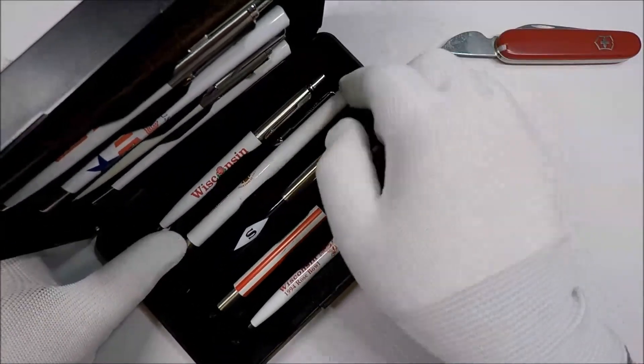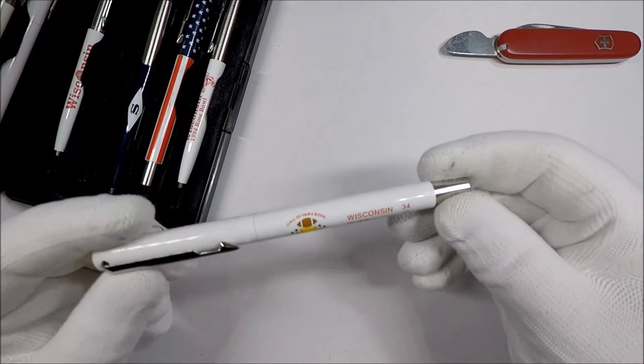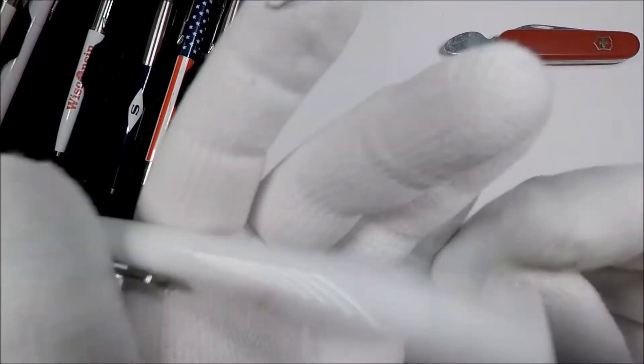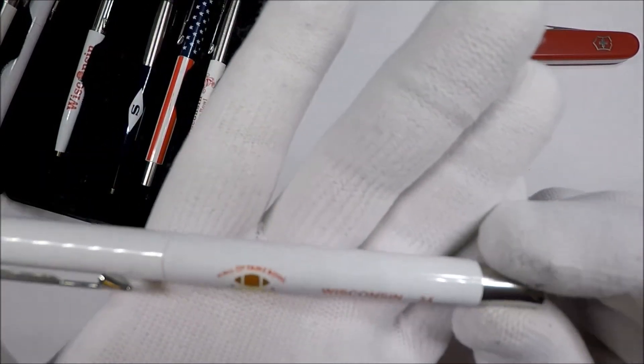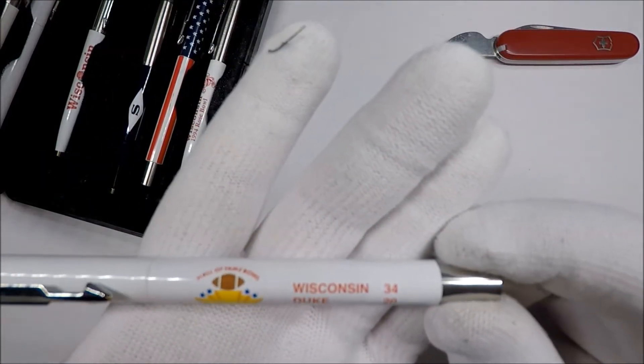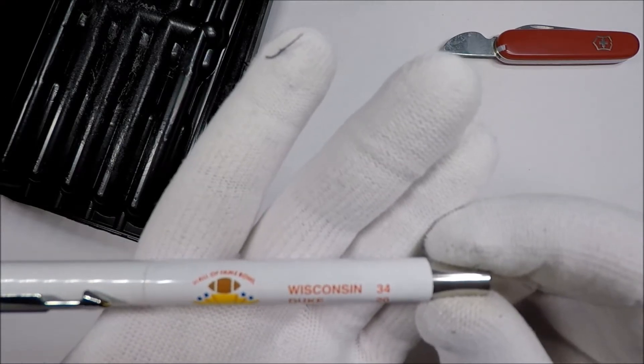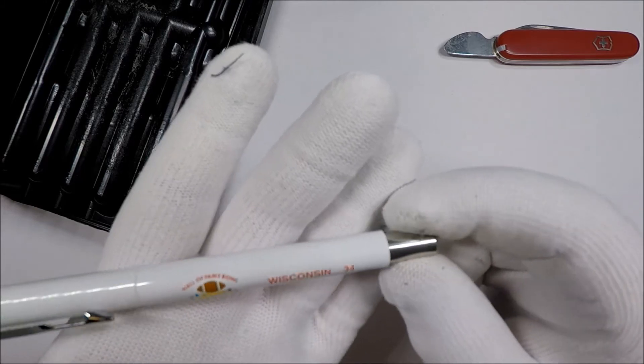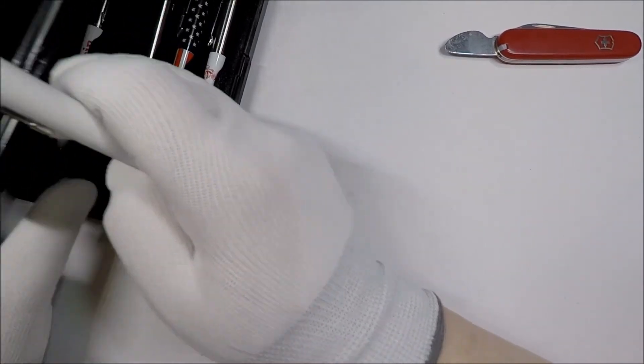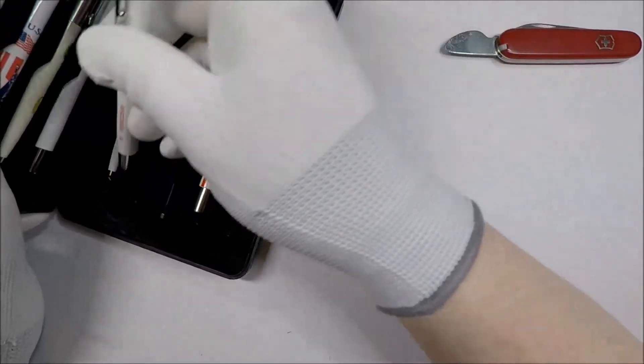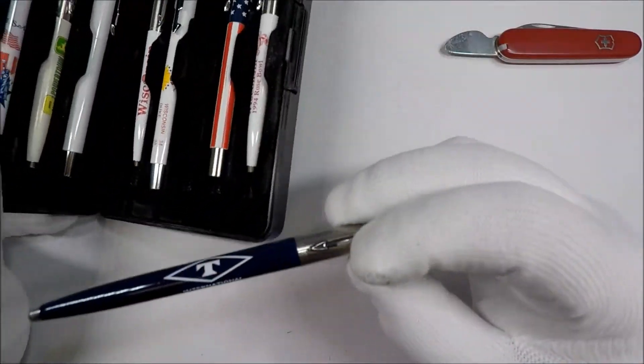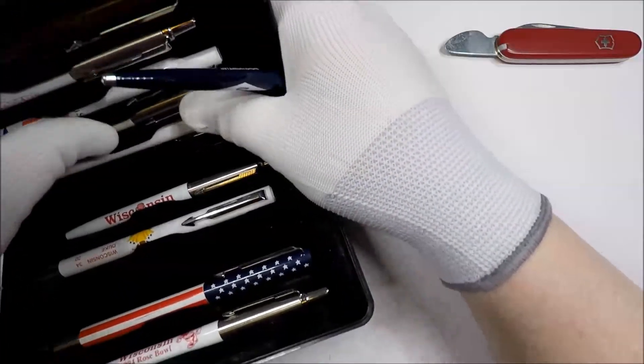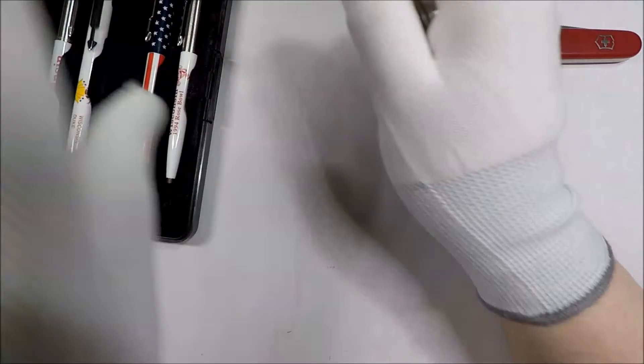And we got another Parker Vector. Hall of Fame Bowl. Wisconsin 34, Duke 20. January 2nd, 1995. So, mid-90s for sure with this particular set. Let's see if I squish this back in here, it'll stay in, at least until I get done looking at these.